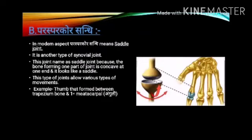Paraspara Sandhi: In the modern aspect, Paraspara Sandhi means saddle joint. It is another type of synovial joint. This joint is named saddle joint because the bone forming one part of the joint is concave at one end and looks like a saddle. This type of joint allows various types of movement. It is present in the thumb, formed between the trapezium bone and first metacarpal bone.